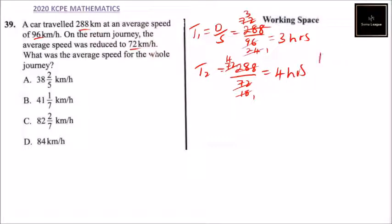Now total time T is equal to T1 plus T2, which is equal to 3 plus 4, which equals 7 hours. So the total journey took 7 hours. Now we calculate the average speed.